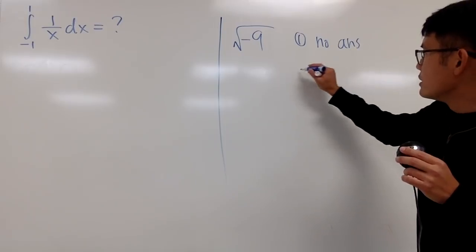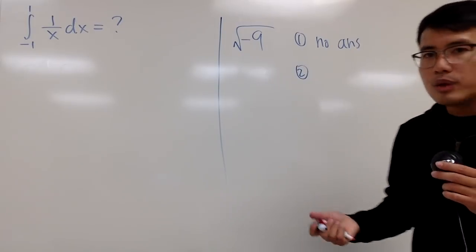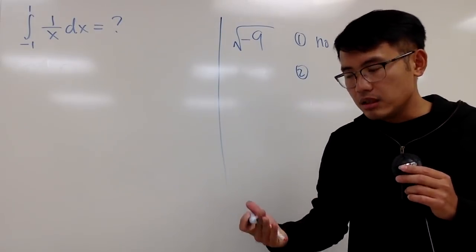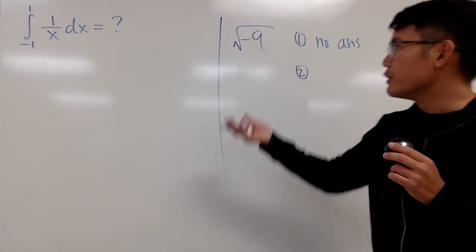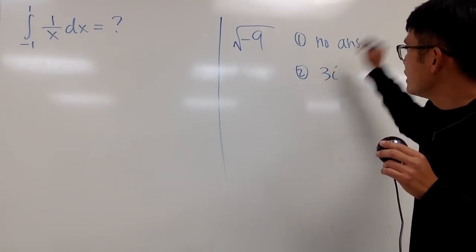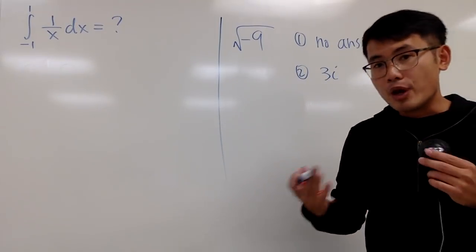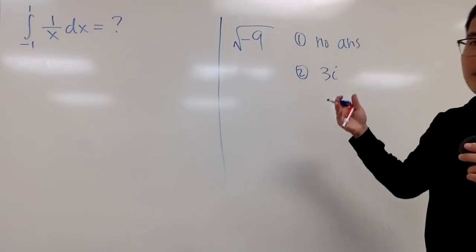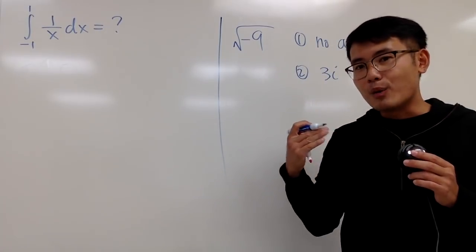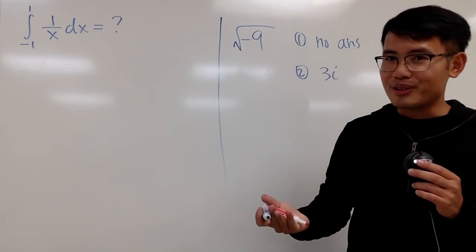So the first way is there is no answer. But the second way is after you have seen complex numbers, then you can say this is 3i. Well, how would you answer this question then? As I said, it depends on what class you're in or who you are talking to.